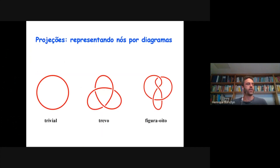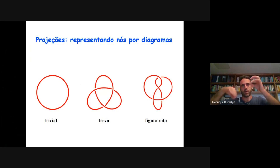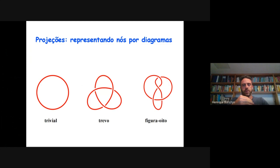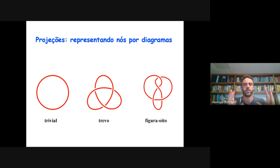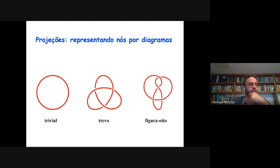Como é que a gente representa nós em matemática? A representação que a gente faz, o desenho que a gente faz, são esses diagramas, que são a projeção do nó — que em princípio é uma curva fechada no espaço — no plano. A gente desenha eles no plano, e é importante que nos cruzamentos a gente indique qual é a parte da corda que está por cima e qual é a parte que está por baixo. Isso permite que a gente tenha uma visualização do objeto no espaço, ainda que o desenho seja no plano.